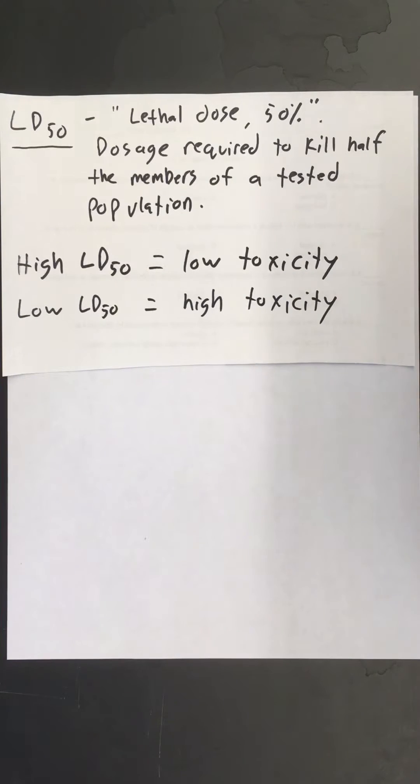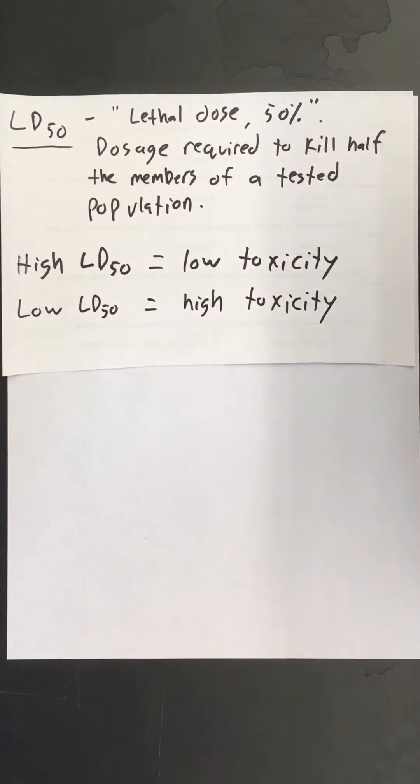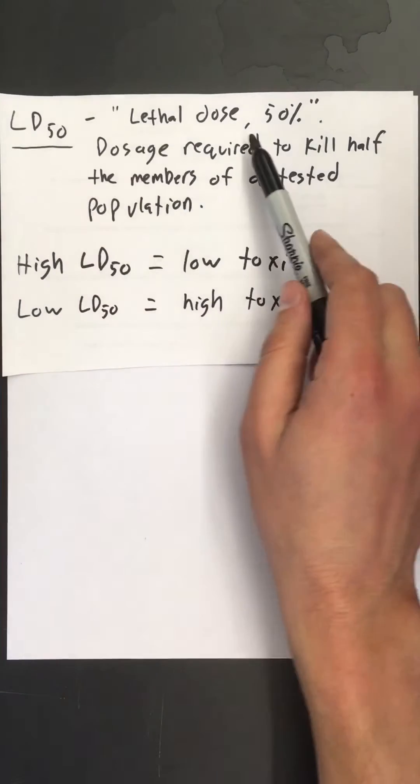Hey science fans. Today we're talking toxicology and specifically LD50s, which is a concept used by toxicologists to determine the lethality of a certain substance. The LD50 is defined as the dosage required to kill half the members of a tested population. LD stands for lethal dose.